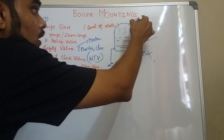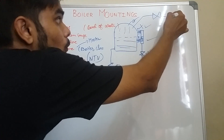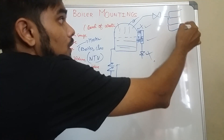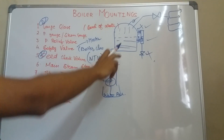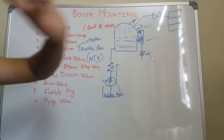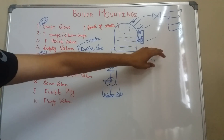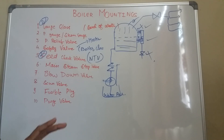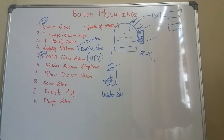The next one is your main steam stop valve, situated at the top of the boiler. Suppose the quality of the steam coming out from the boiler is not good — we stop this main steam stop valve so that it won't go to any of the places where the application of steam is taking place.